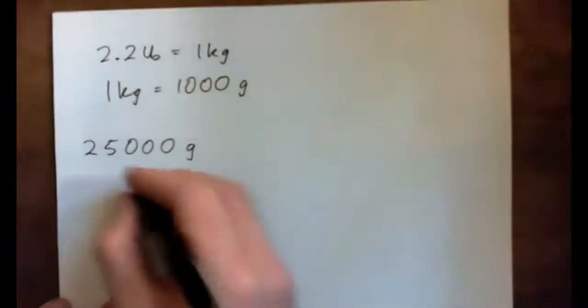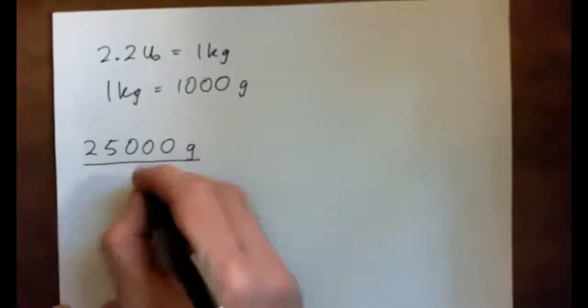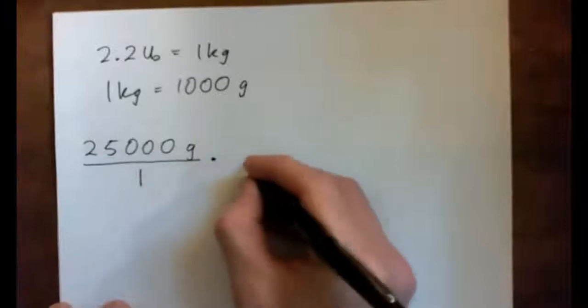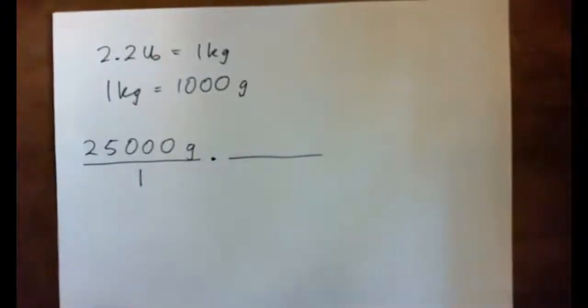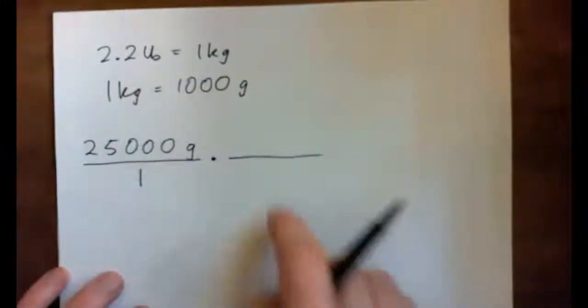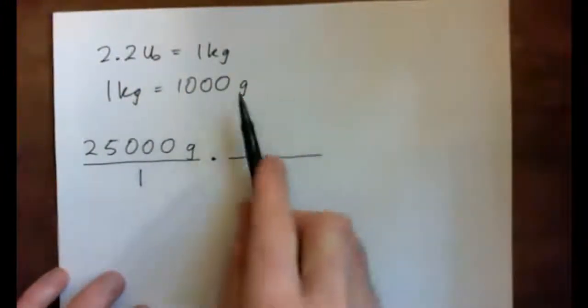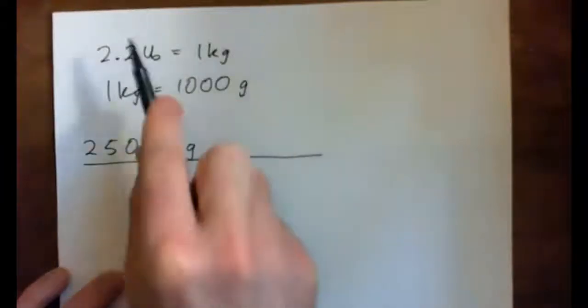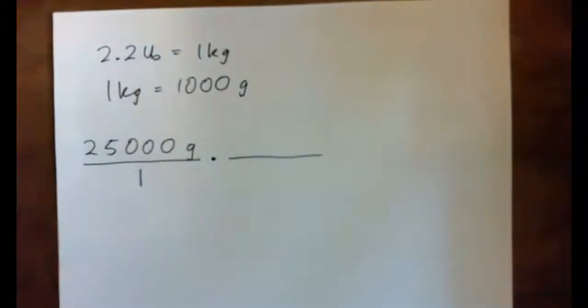So the unit analysis way is to go put that over one, right? And then we're going to convert this to pounds, but we have a way to get from grams to kilograms, and then we have a way to get from kilograms to pounds. So we're just going to do one step at a time.